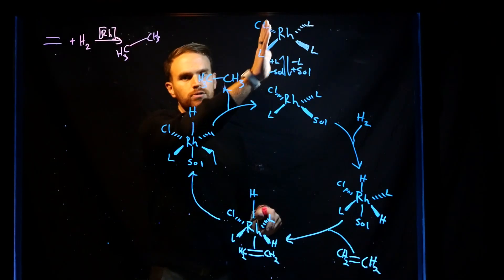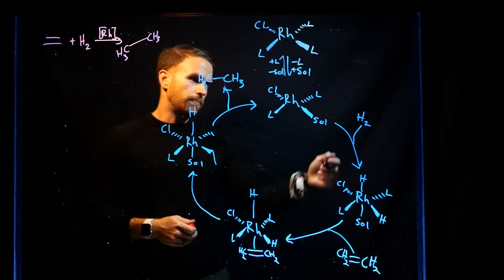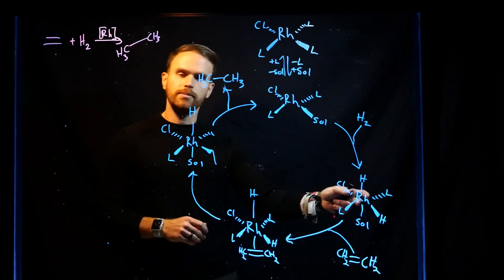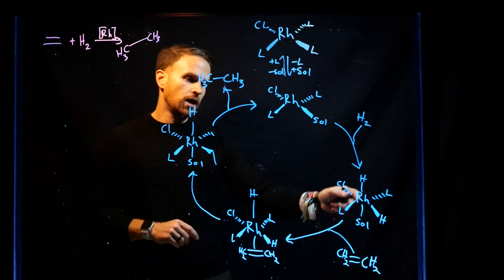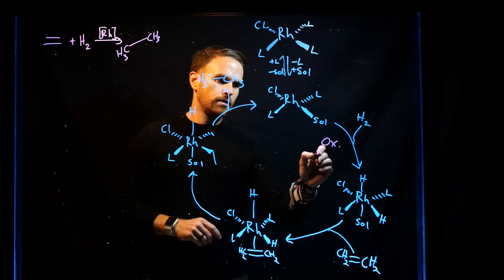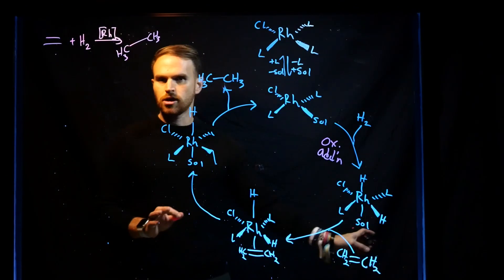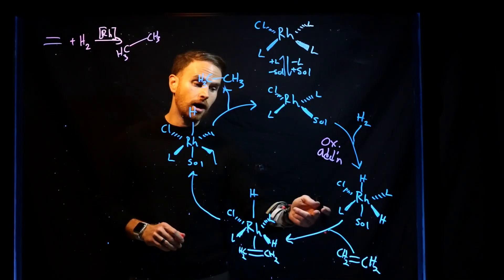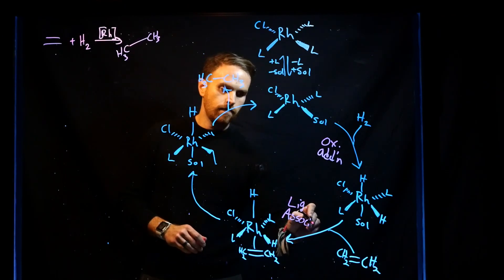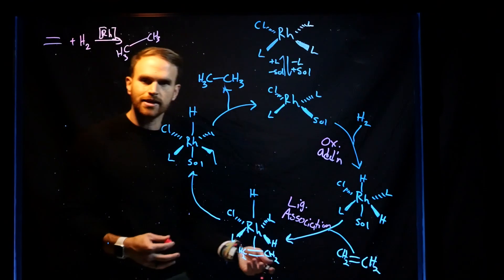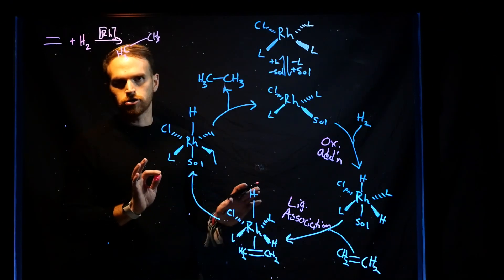The first step I asked you about is where H2 is coming in — rhodium effectively inserts itself into that H-H sigma bond — creating this brand new species. This step is oxidative addition. The next step is the solvent coming off, which is ligand dissociation, followed by ligand association of the alkene. Anytime ligand association happens, you increase the overall electron count by two and don't change the oxidation state.